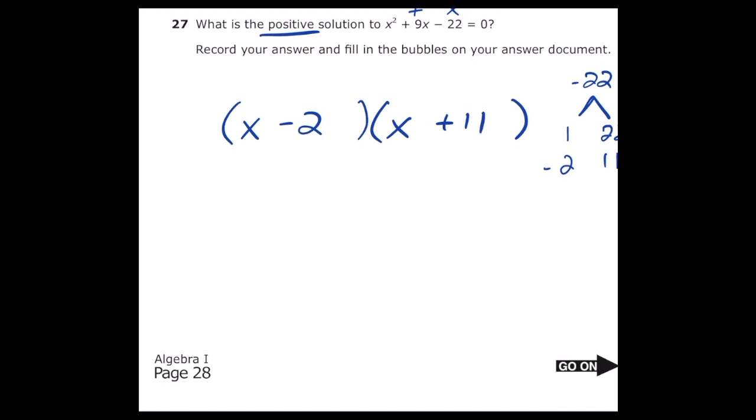Now since our trinomial is set equal to 0, in order for that to be true one of these sets of parentheses has to equal 0. So our solutions would be x equals 2 and x equals negative 11 because that would make each parentheses equal to 0. They just want to know the positive solution so obviously our answer is x equals positive 2.